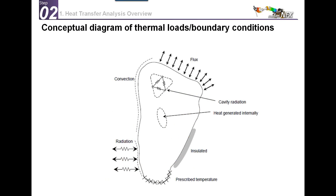In finite element analysis, here is a diagram representing the kinds of heat loads and boundary conditions you encounter in a heat transfer analysis. Your medium can be insulated if there's no heat exchange. You can apply convection on external faces, radiation on external faces or inside a cavity, internal heat generation as a heat source, a flux of energy around, and you can fix the temperature at certain points of your model.